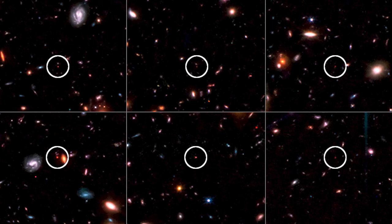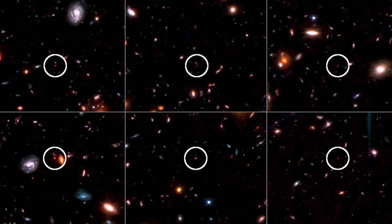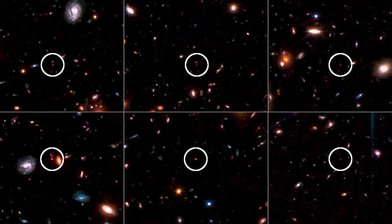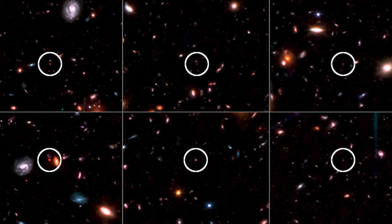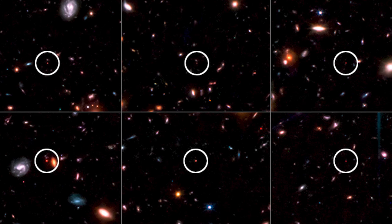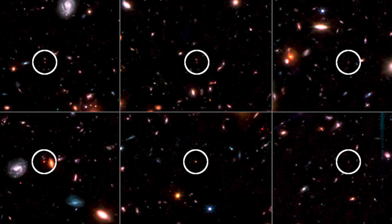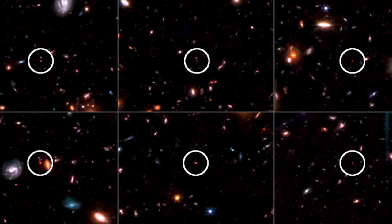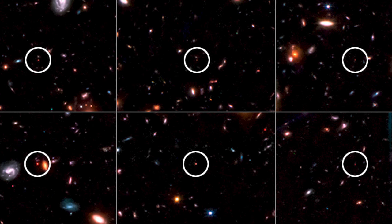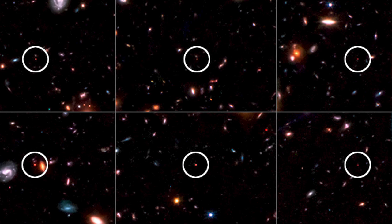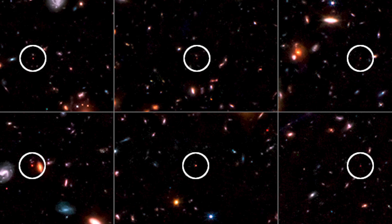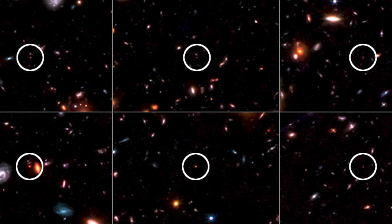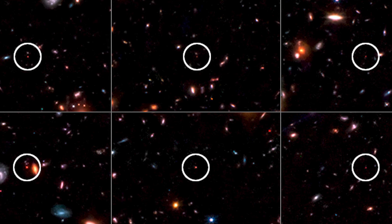These findings are surprising and puzzling for several reasons. First, they imply that these galaxies originated rapidly and efficiently in a short period of time, transforming most of their available gas into stars. This contrasts with the conventional view of galaxy formation, which predicts that galaxies start small and gradually grow by merging with other galaxies or by accreting gas from their surroundings.